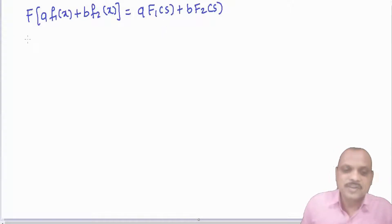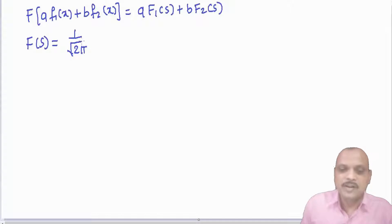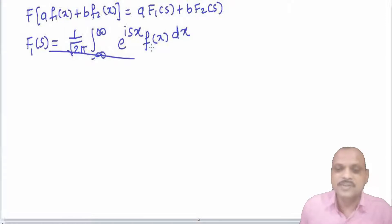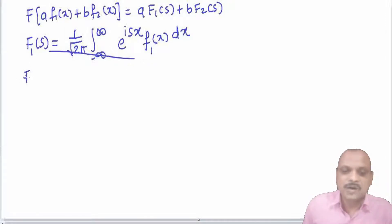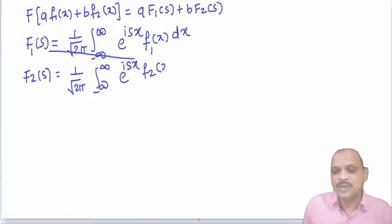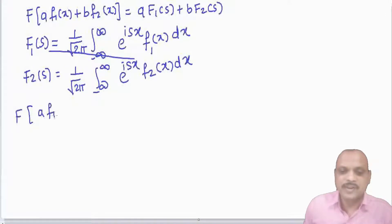Remember, the Fourier transform is defined as F(s) = (1/√(2π)) ∫ from −∞ to +∞ of e^(isx) · f(x) dx. We write F1(s) = (1/√(2π)) ∫ from −∞ to +∞ e^(isx) · f1(x) dx, and F2(s) = (1/√(2π)) ∫ from −∞ to +∞ e^(isx) · f2(x) dx.